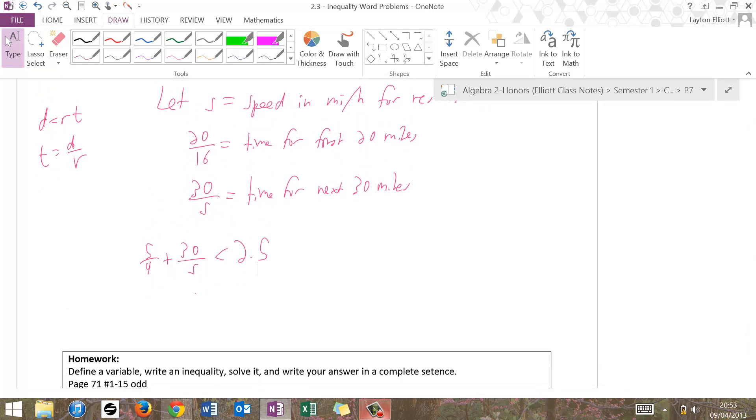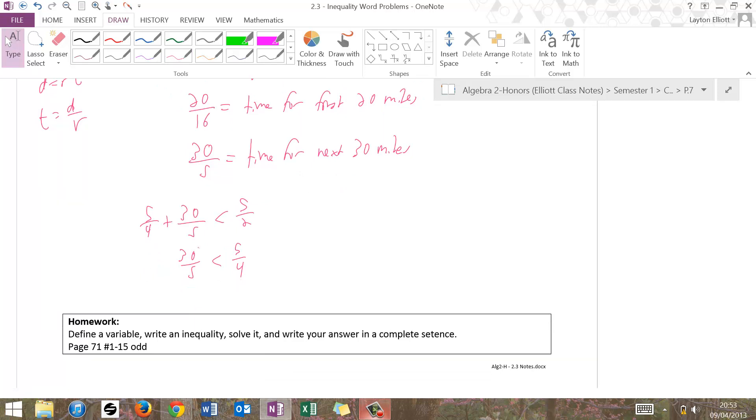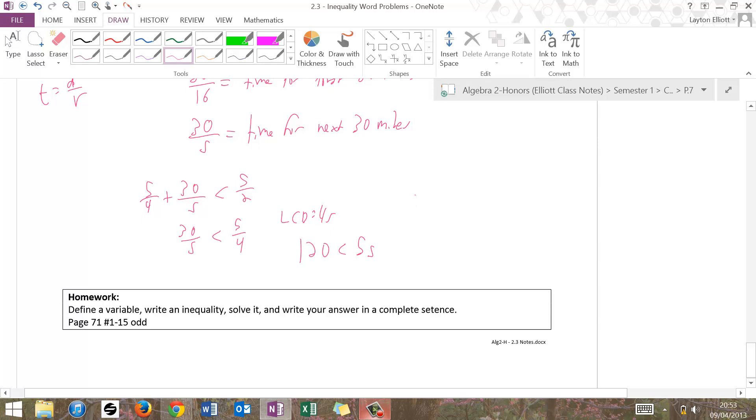5 over 4 plus 30 over s is less than 2.5, and it wants to know what his average speed is. So what we're going to do is actually, I'm just going to subtract 5 fourths. We haven't yet done multiplying through with variables in the denominator, and I don't want to mess with that just yet. So 30 over s is less than, well, 2.5 is 5 halves. 5 halves minus 5 fourths is 5 fourths. Prove that to yourself. So now we have this, 30 over s, 5 over 4. I'm trying to think of, you guys want the easiest possible way to do this when it's not an equal sign. But I suppose we could do a multiply through by 4s. S is not negative, so that works. So I'm going to do an LCD of 4s here. I could have done that originally. If I do an LCD of 4s, my s's cancel and I get 120, and then my 4's cancel and I get 5s. Divide both sides by 5, flip it around, and I get s is greater than, that would be 24.